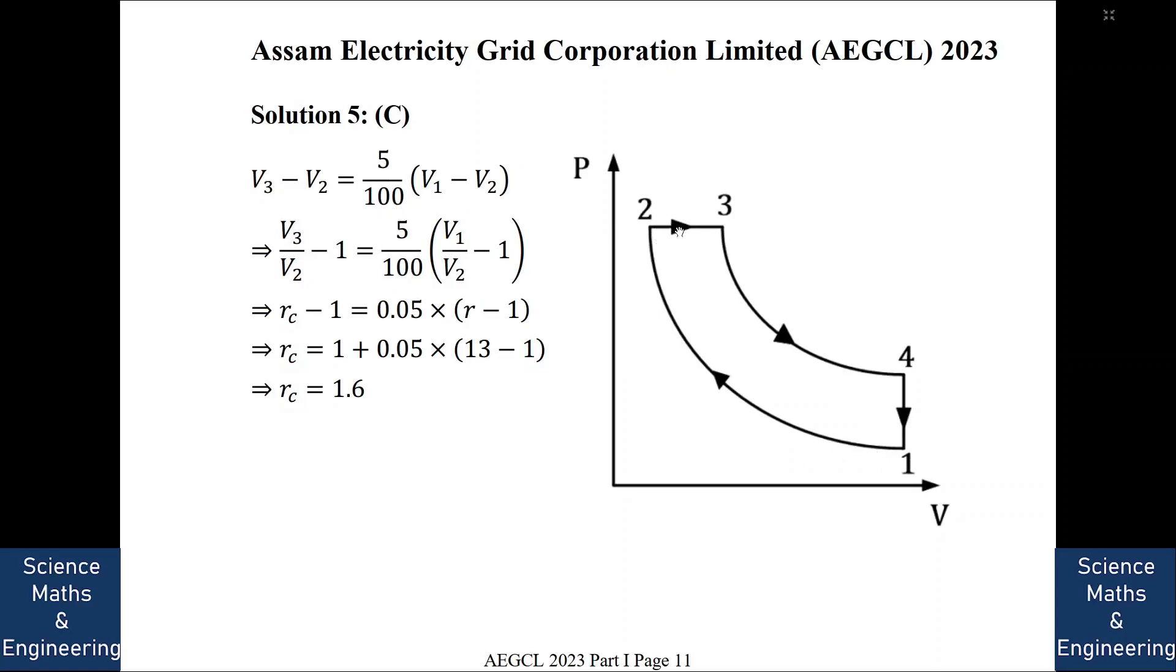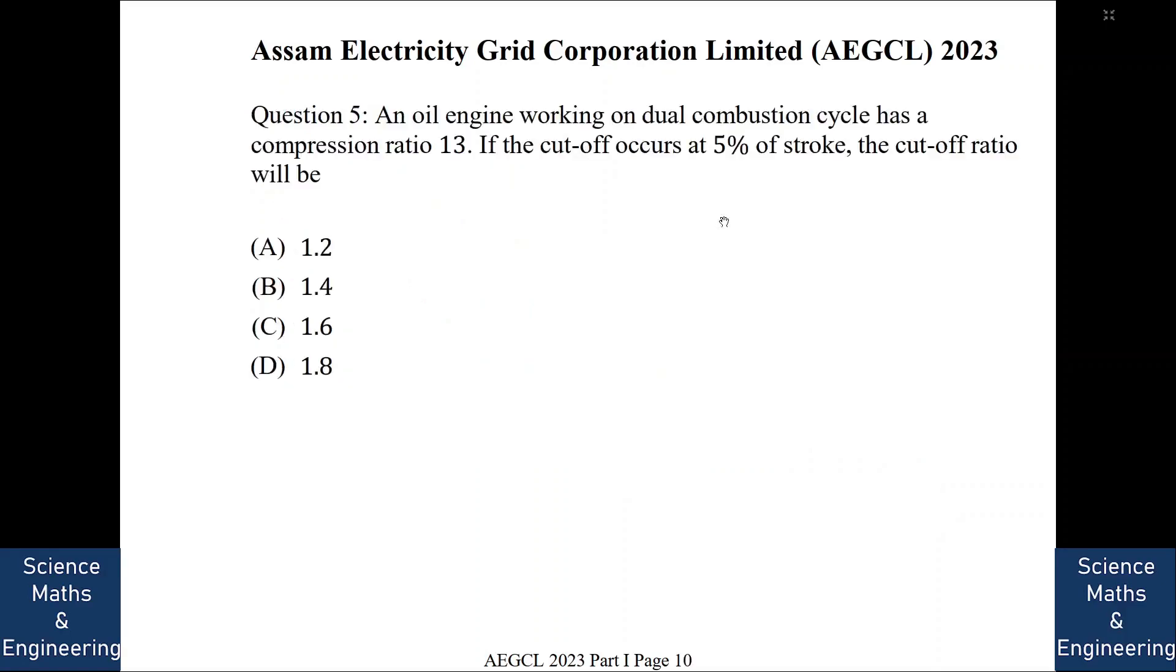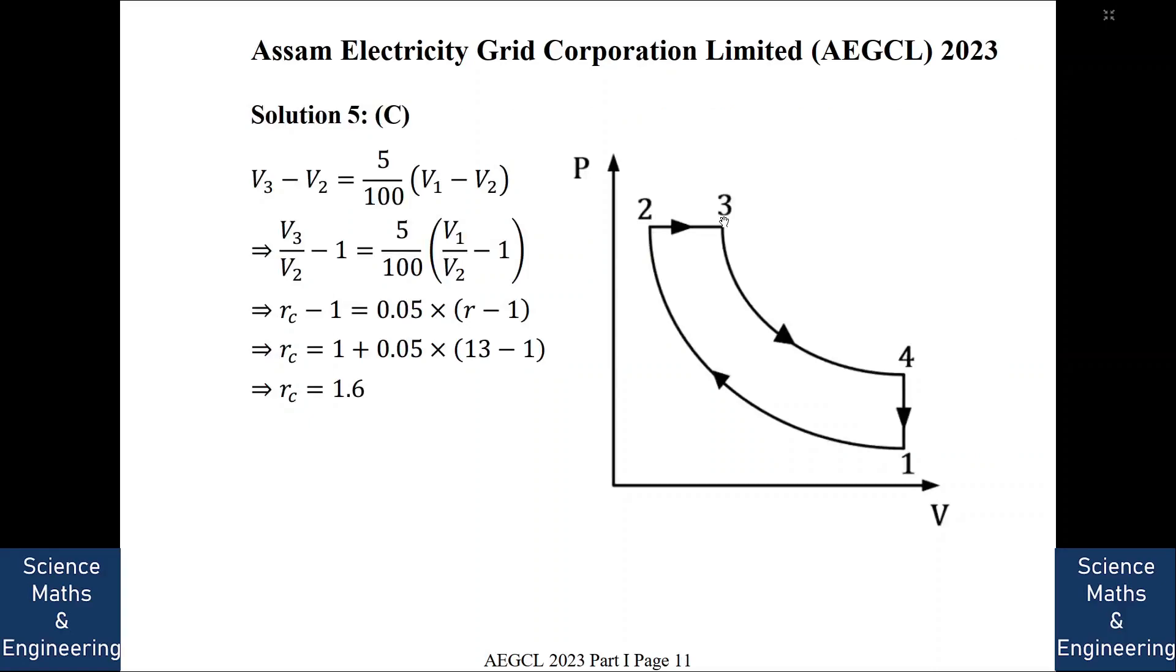Now we say this is the V3 minus V2, so this is where cutoff occurs. So V3 minus V2 is equal to 5% of V1 minus V2. Now from here, if we divide V3 by V2 minus 1 is equal to 5 by 100 into V1 by V2 minus 1. So we divide both sides by V2. Now V1 by V2 is what? Compression ratio.